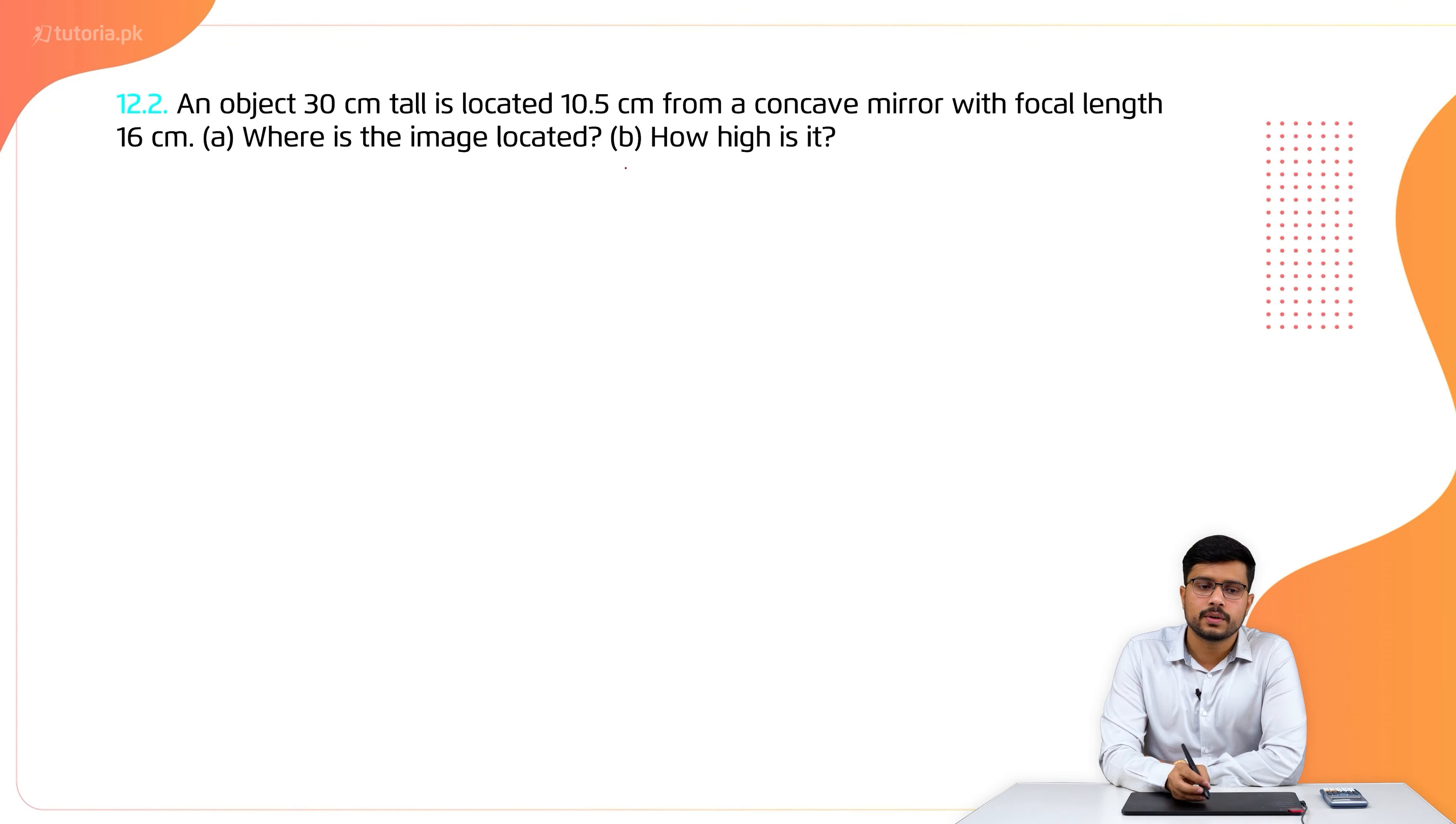When we have an object 30 cm, the height of the image will be how much? How do we put it in the magnification? What is the formula? You know that if we have Q, then we have 1 over F is equal to 1 over P plus 1 over Q.